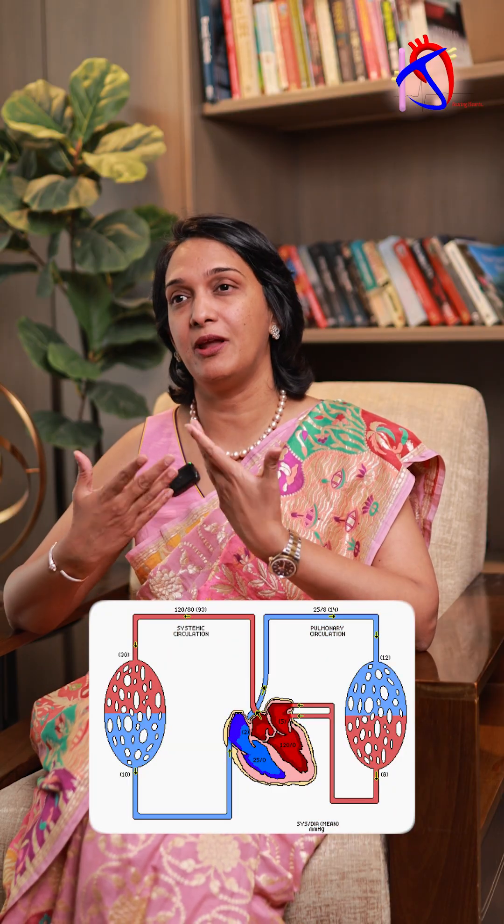Systemic hypertension is when your blood pressure is high — when you check with the regular blood pressure cuff and your blood pressure is high, that is systemic hypertension. There is something called pulmonary hypertension, which affects the pulmonary artery. The right side of the heart is mostly affected by pulmonary hypertension.